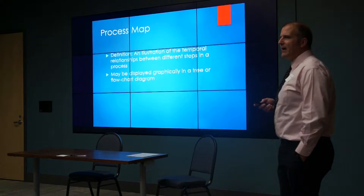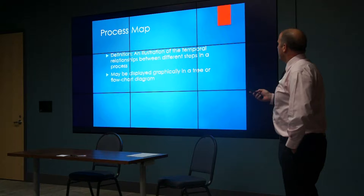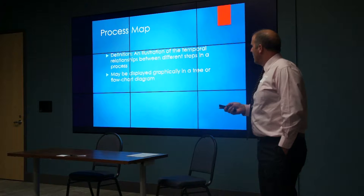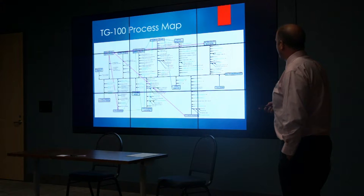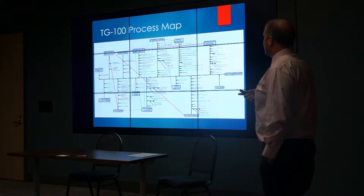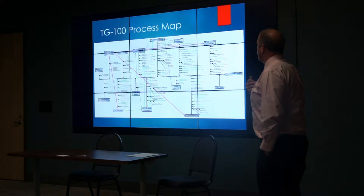By definition, a process map is an illustration of the temporal relations between different steps in a process. You start from the first step and go through every step that takes place and what happens. This may be displayed graphically in a tree or flowchart diagram, or simply as an outline. The example from TG-100 was to look at an IMRT process—there were 216 steps and 15 major steps in this particular process.